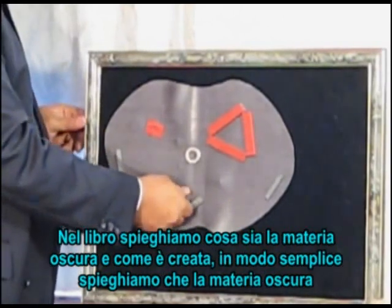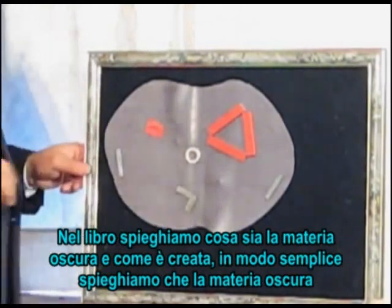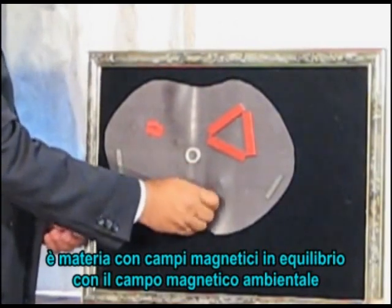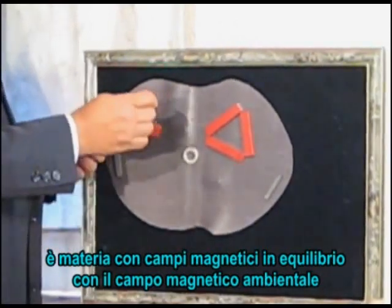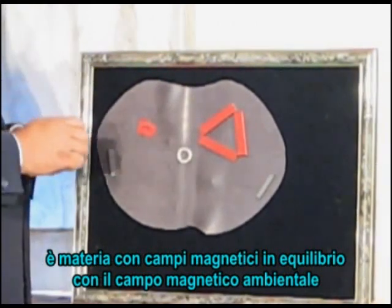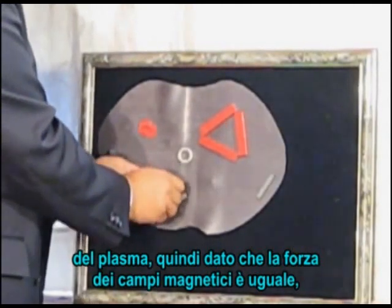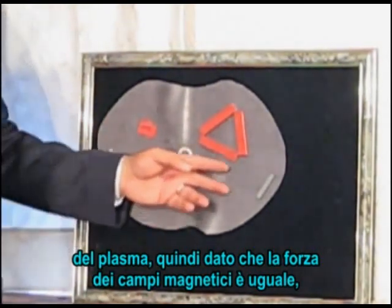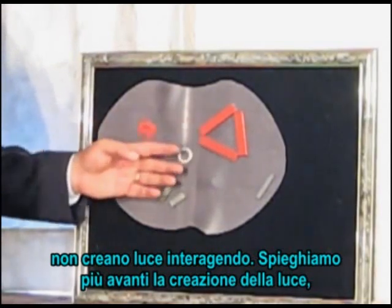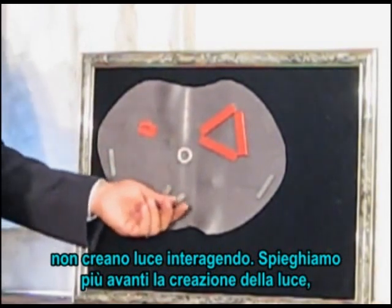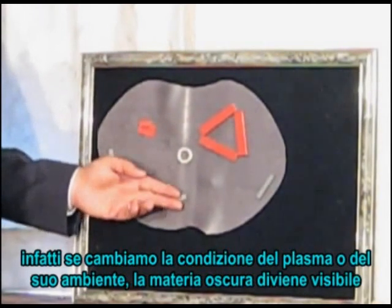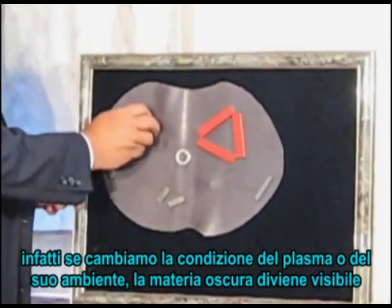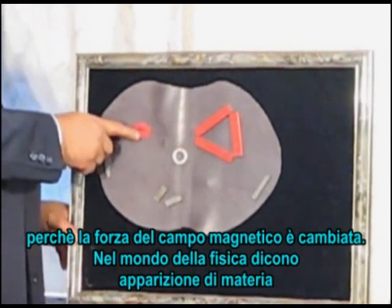In the book, we explained what dark matter is and how dark matters are created. In a very simple way: dark matter is actually matter where its magnetic fields are literally in balance with the magnetic field environment of the plasma. As the strength of the magnetic fields are the same, they don't create any light in their interaction with each other. If we change the condition of the plasma or the environment of the plasma, we find that the dark matter becomes visible matter, because only the magnetic field strength of the plasma has changed.